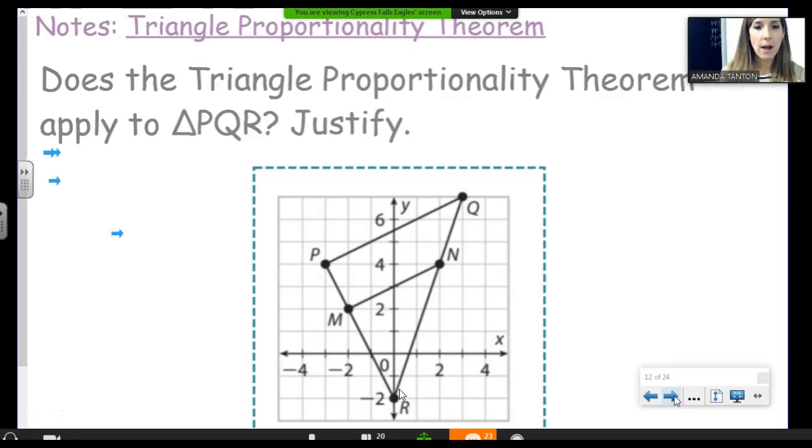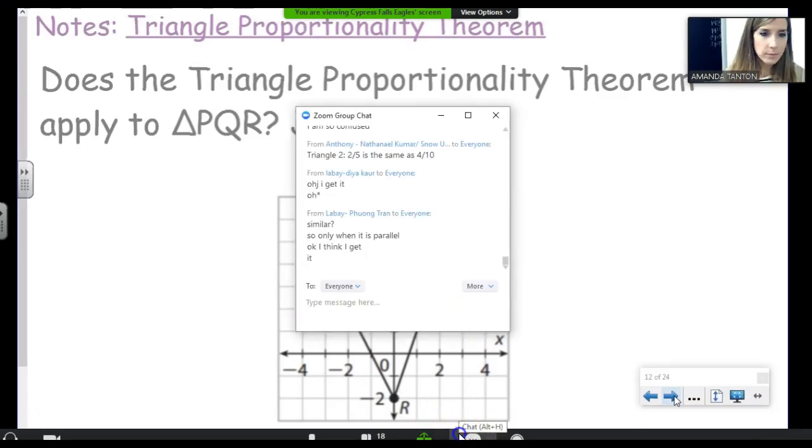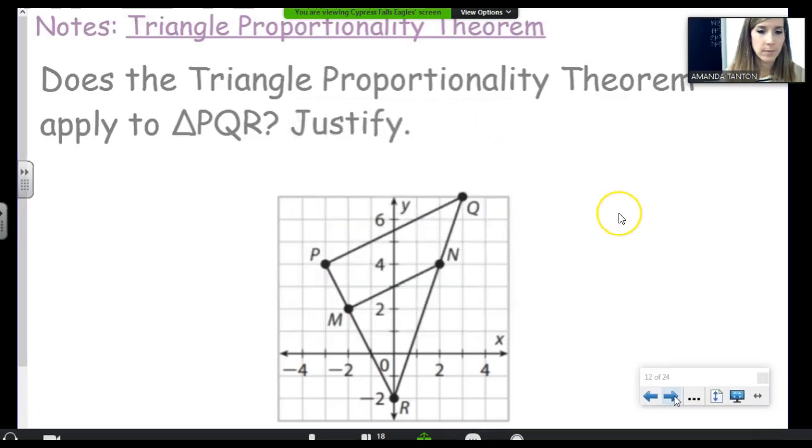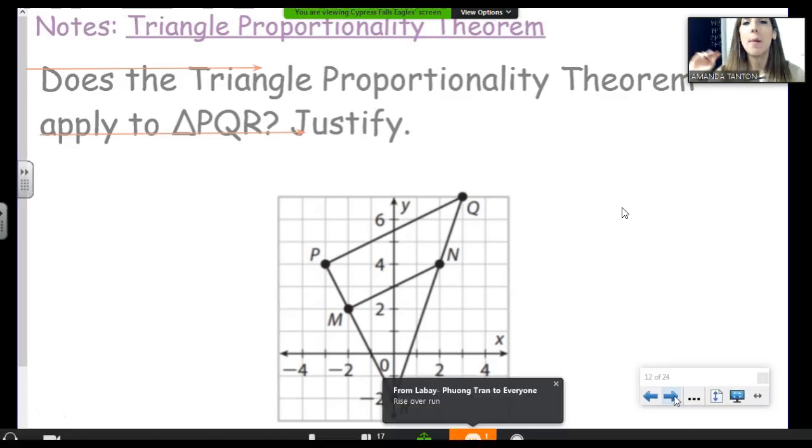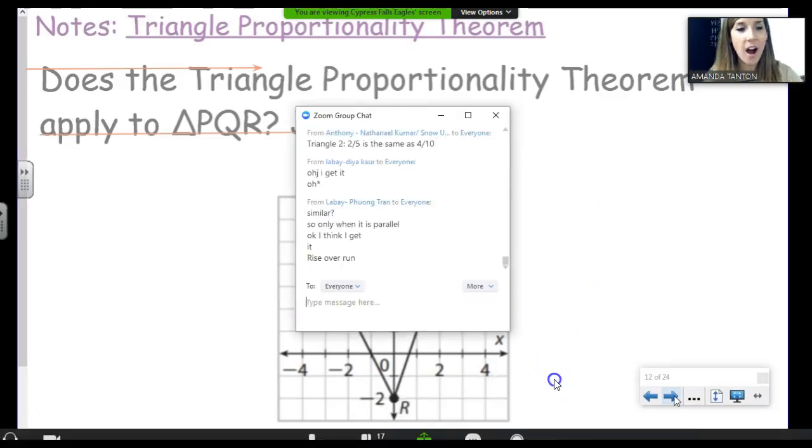All right, so it's always good to try out what we learned on the coordinate plane as well. Does the triangle proportionality theorem apply to this triangle? How can we determine if we're allowed to use the theorem here? Oh, I love that. Love it. You have to find the slope. Slope can tell us if two segments are parallel. Then if they're parallel, we're allowed to use the theorem. We're not actually going to use the theorem, but we'll know that it applies to this picture. Awesome.